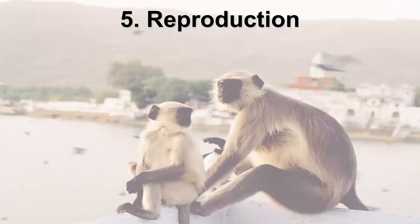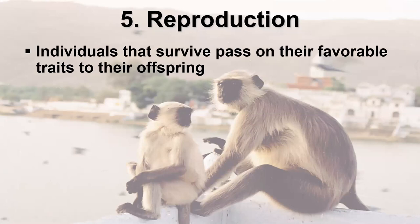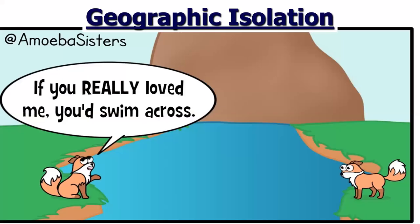The next concept Darwin discussed is reproduction. If you're best fit to survive, you're more likely to survive because you have the traits that are good for that environment, so you're more likely to reproduce. And when you reproduce, you're more likely to pass on those traits. So we see those favorable traits appear over and over again in future generations. If you survive, you pass on your favorable traits. If you don't survive, you don't pass on your traits because they were unfavorable.